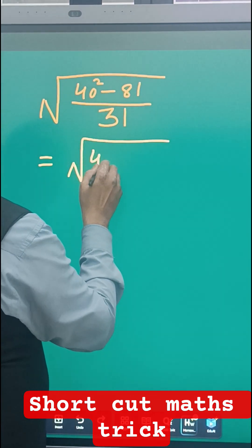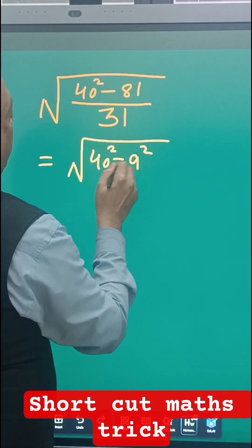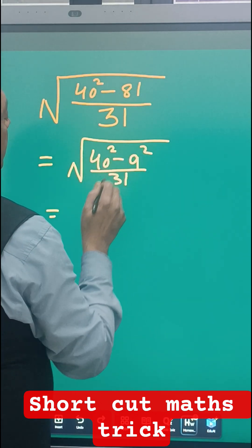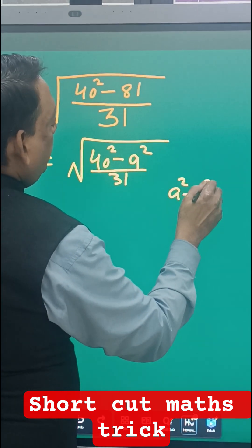This will be 40 squared. Same way, 81 we can write as 9 squared, and then over 31. Now, what is a² minus b²? a² minus b² is (a+b)(a-b). We have to use this rule here.